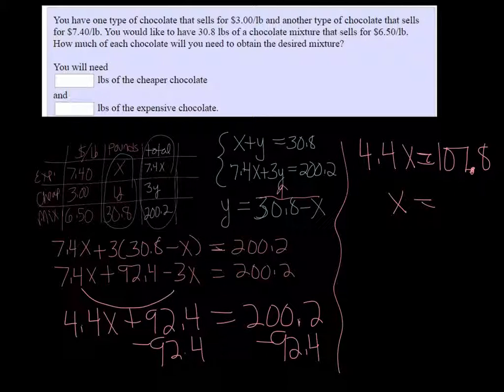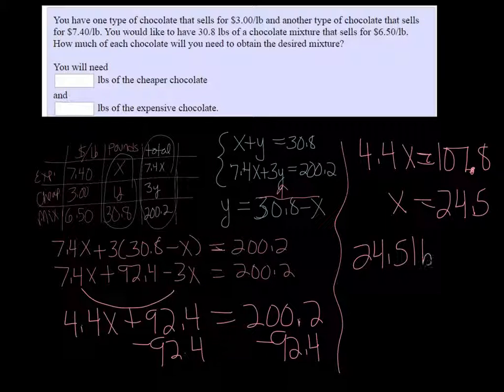We have solved for X and X is 24.5. So that means that we need 24.5 pounds of, now X stood for the expensive chocolate. So the expensive chocolate.